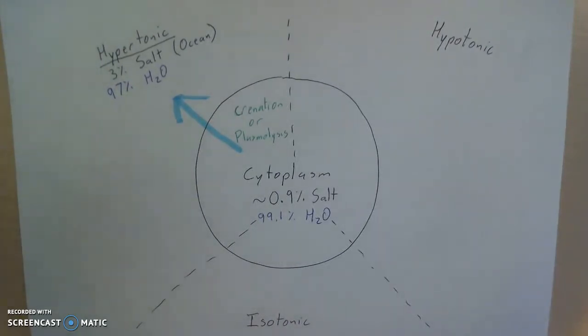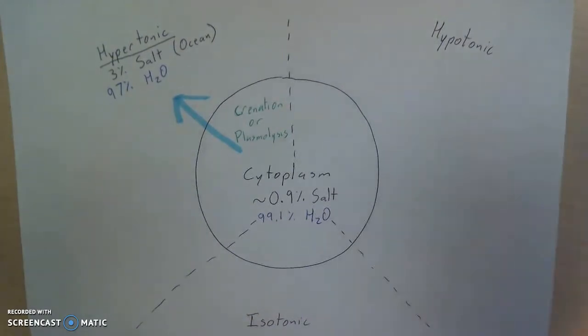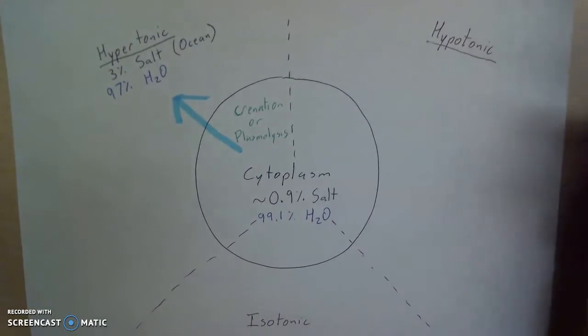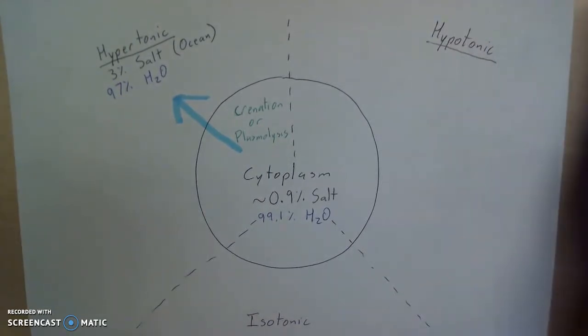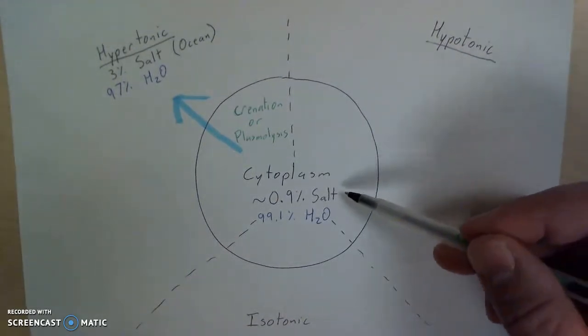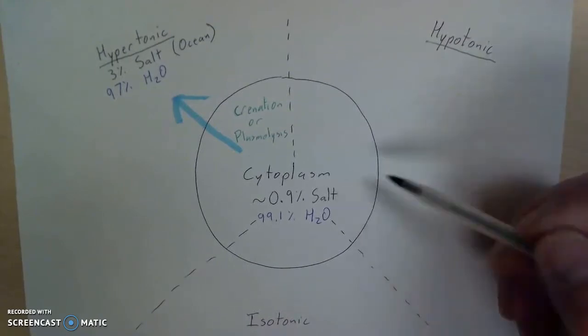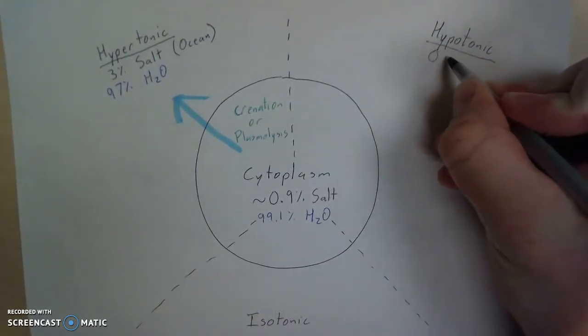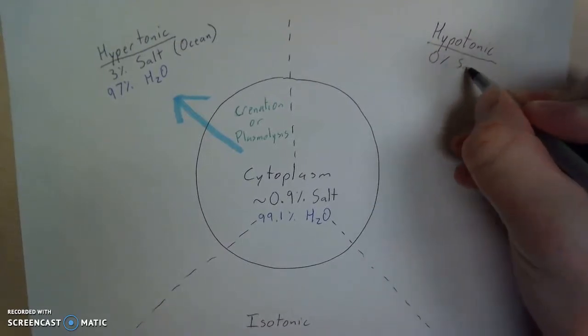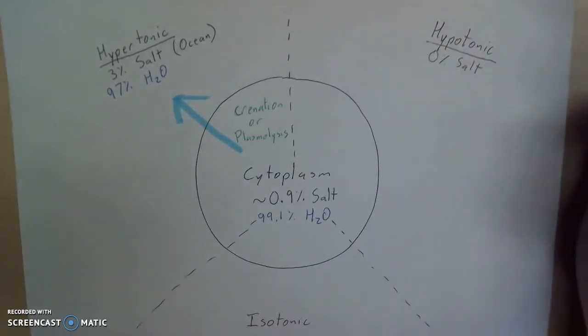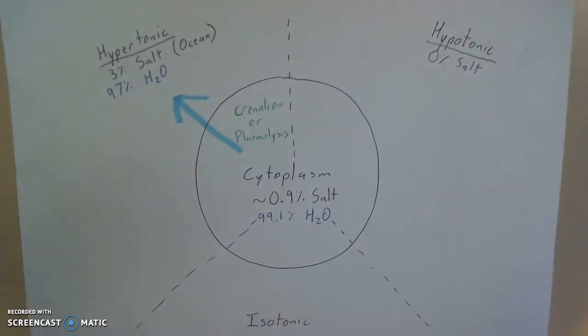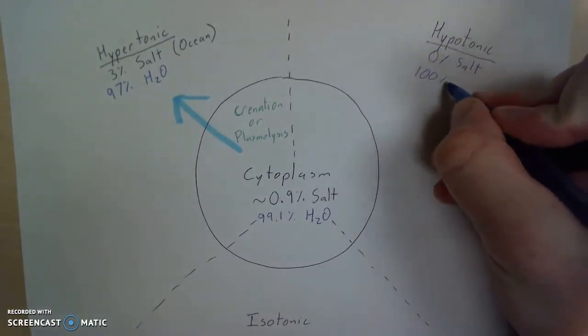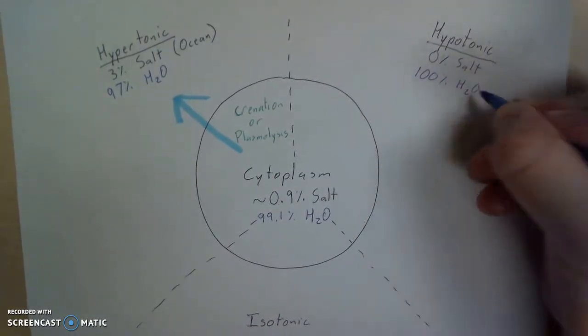Let's think about a hypotonic environment. So for a hypotonic environment, hypo means lower. Tonic refers to the solutes. In this case, we're focusing on salt. So this environment, hypotonic, must have a lower salt concentration than the cytoplasm. So I'm just going to say, let's imagine a 0% salt environment. Again, if this environment has no salt, what's the rest? We're going to quite simply say, it's 100% water.